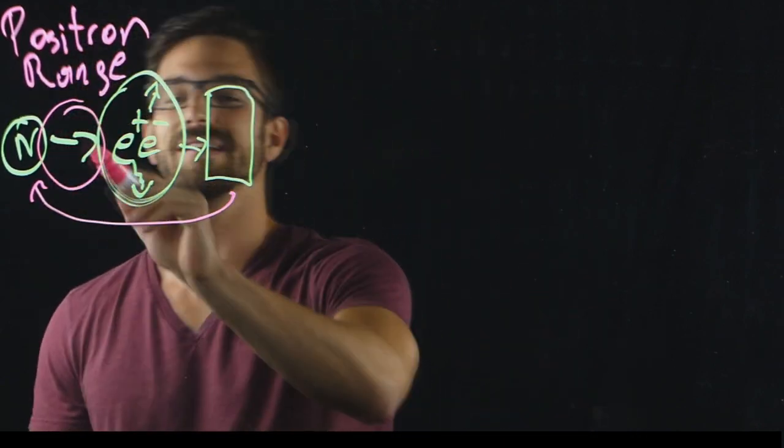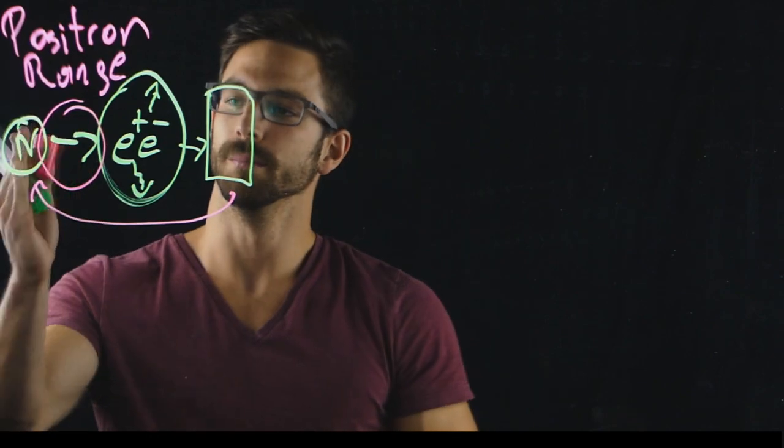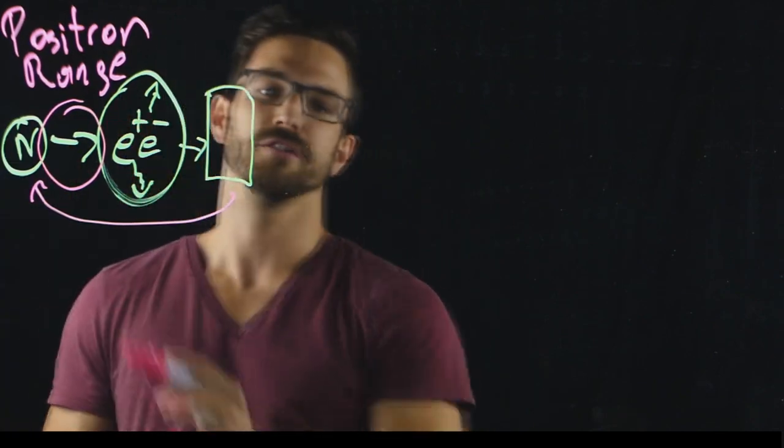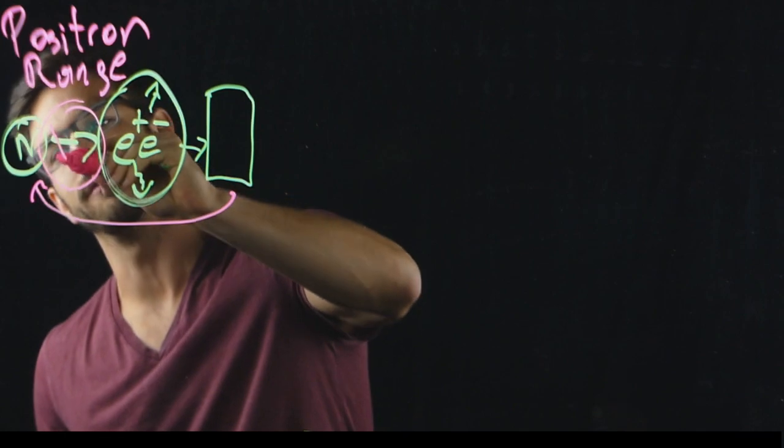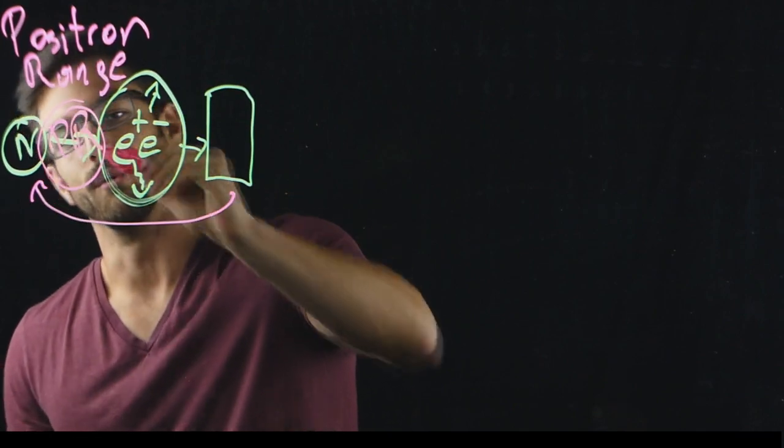One of these physical properties is this one: the distance between point of emission and point of annihilation. That's what I want to talk about today. This is the positron range.